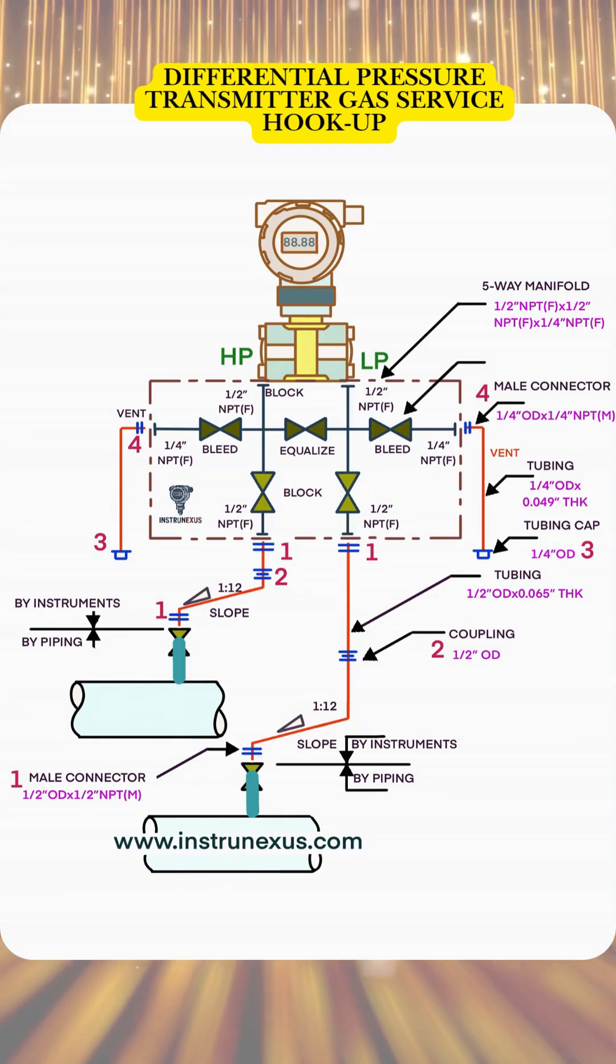Here, the high-pressure (HP) and low-pressure impulse lines connect the process to the transmitter through a five-way manifold.